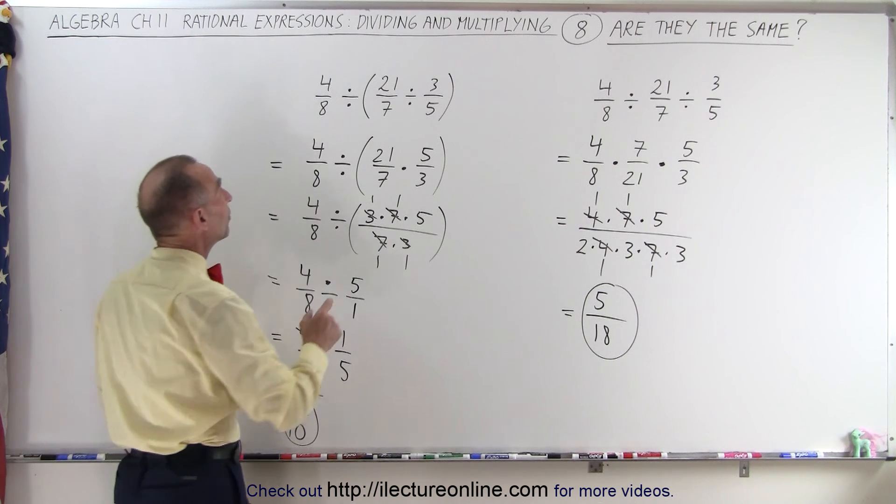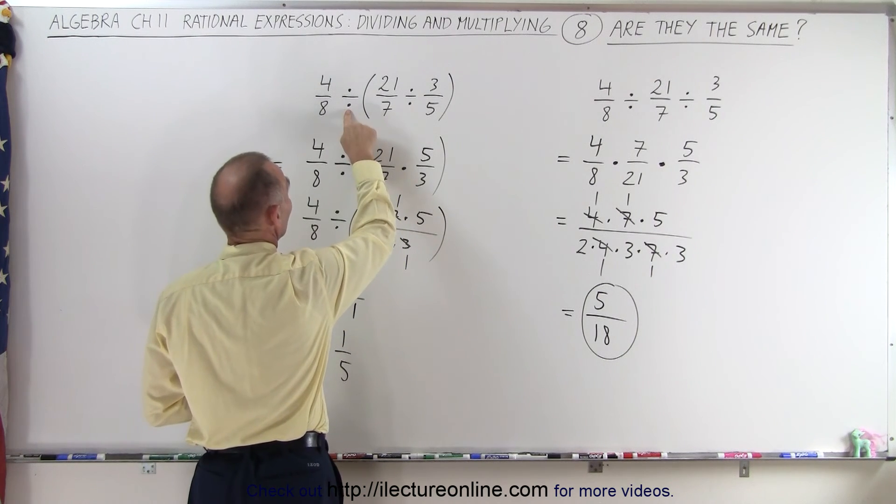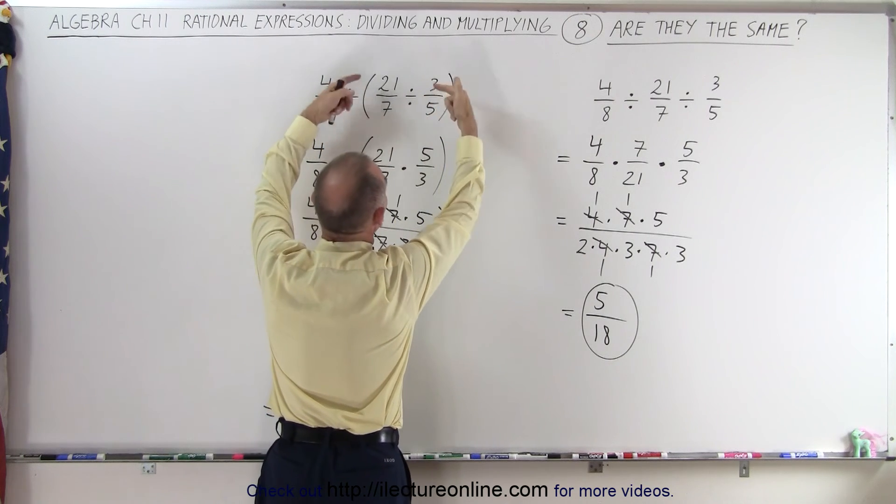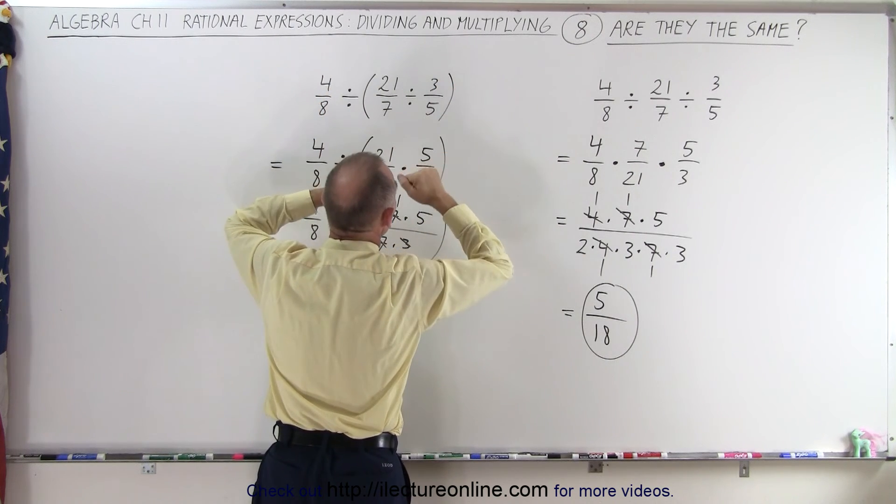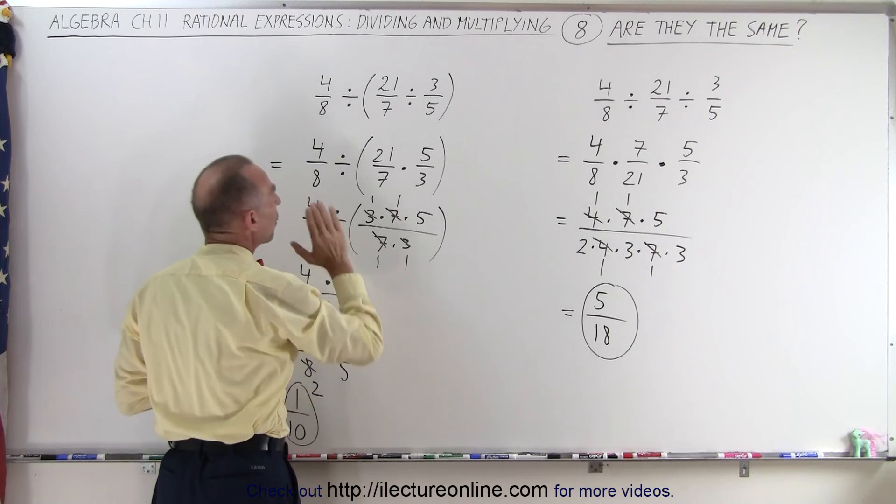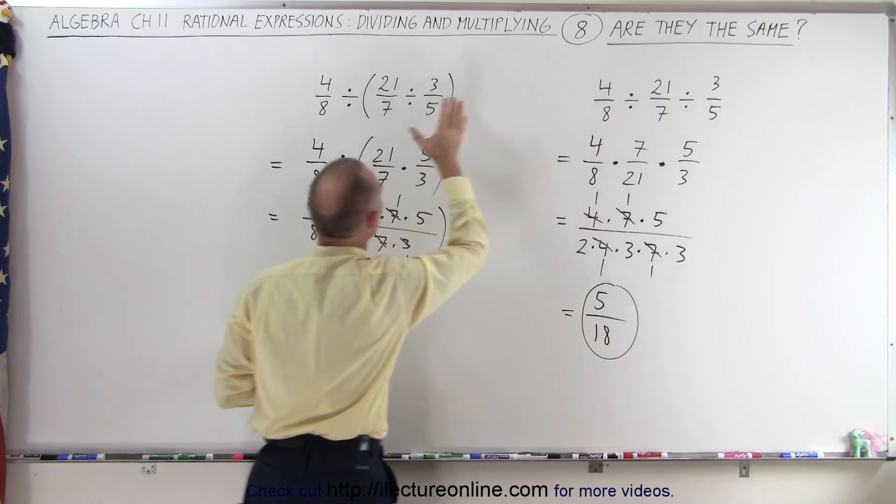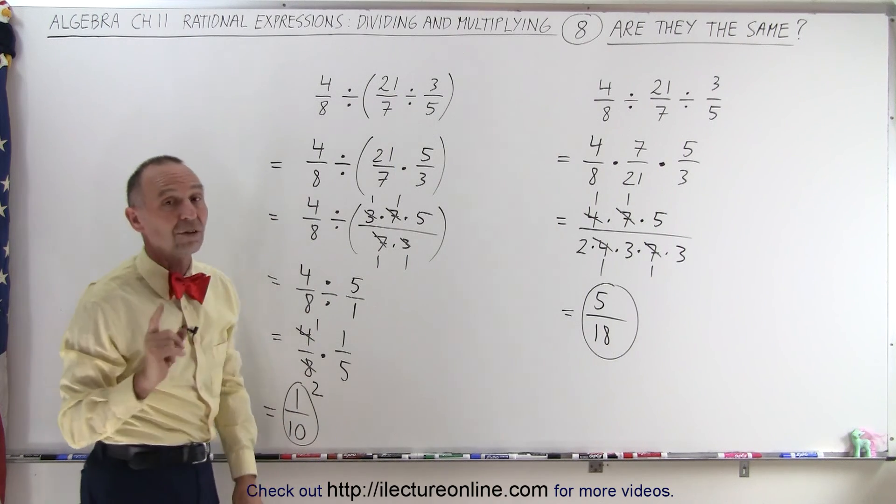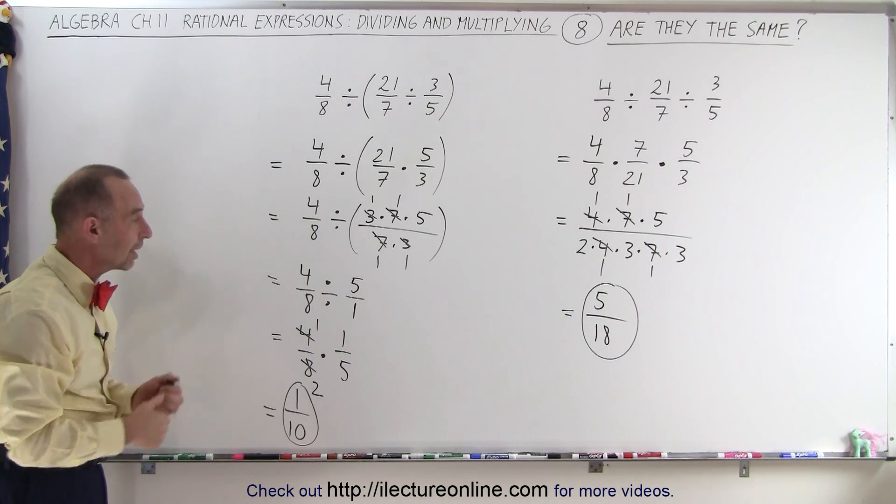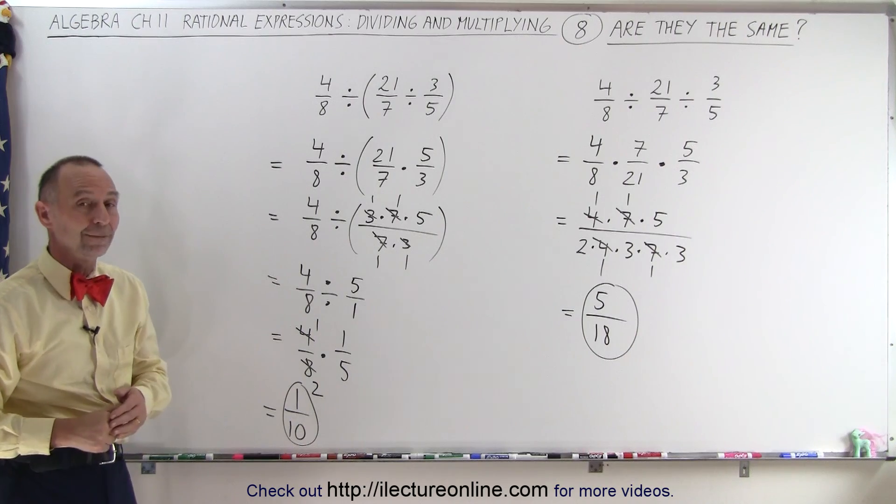So if you take this first symbol, make it into a multiplication by turning everything else around, taking the inverse of that, that won't work. You have to work it systematically, either this way when there's no parentheses, or work out what's inside the parentheses first, before you find a result. And that is how that's done.